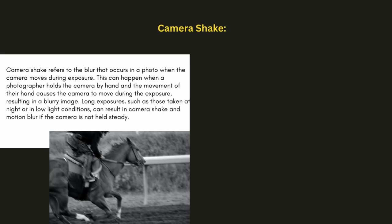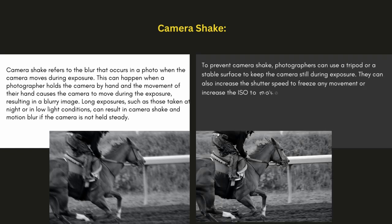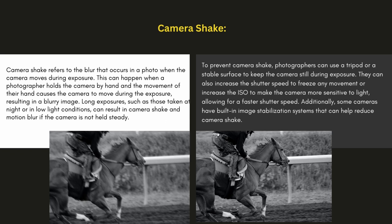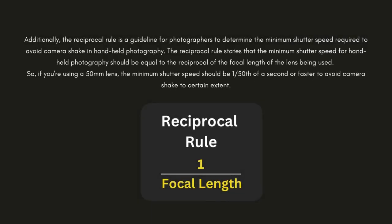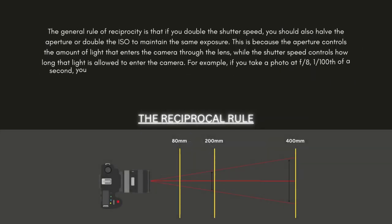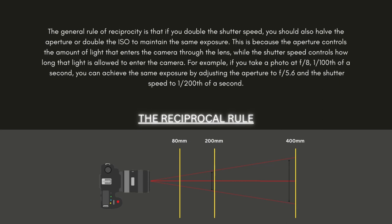Long exposures taken at night or in low-light conditions can result in camera shake and motion blur if the camera is not held steady. To prevent camera shake, photographers can use a tripod or stable surface, increase the shutter speed to freeze movement, or increase the ISO to allow for a faster shutter speed. Some cameras also have built-in image stabilization systems. The reciprocal rule is a guideline for determining the minimum shutter speed to avoid camera shake: the minimum shutter speed should equal the reciprocal of the focal length. For example, with a 50mm lens, the minimum shutter speed should be 1/50th of a second or faster.